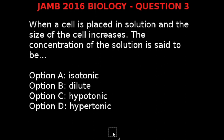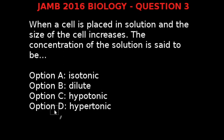JAM 2016 Biology Question 3. When a cell is placed in a solution and the size of the cell increases, the concentration of the solution is said to be: Option A: Isotonic. Option B: Dilute. Option C: Hypotonic. Option D: Hypertonic.